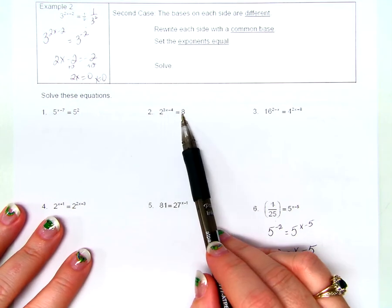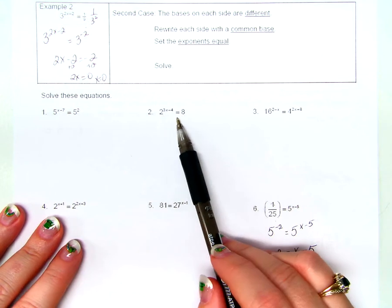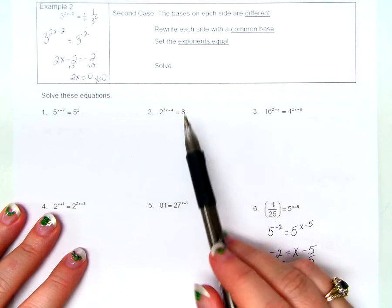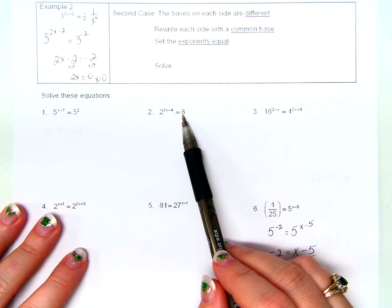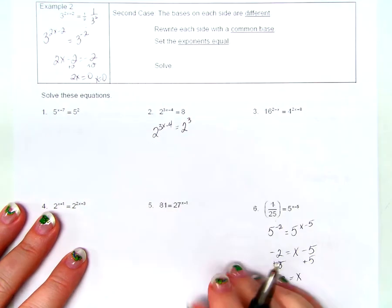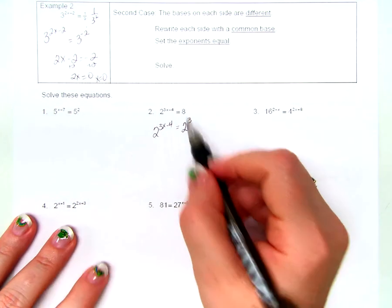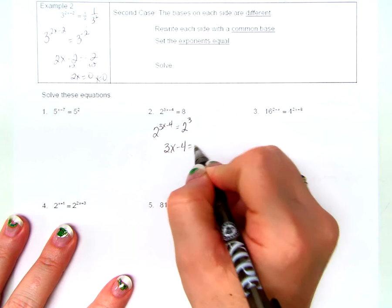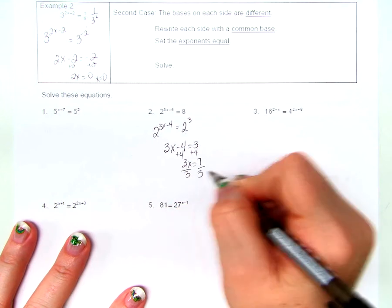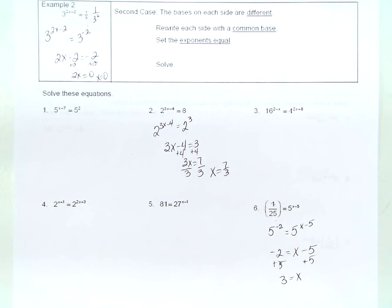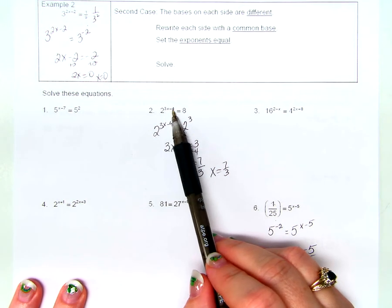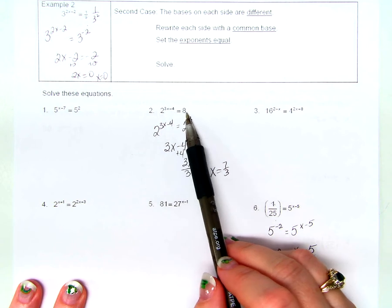Number 2: this has a base of 2 and this has a base of 8. I'll change the base of 8. Can't I write 8 as 2 to the 3rd? So: 2 to the 3rd equals 2 to the 3x minus 4. If the bases are the same, the exponents should be equal, so 3x minus 4 equals 3. Add 4 to both sides: 3x equals 7. Divide both sides by 3: x equals 7/3. Don't assume you did something wrong because it's a fraction. Check: 7/3 times 3 is 7, minus 4 is 3, and 2 to the 3rd power is 8. We got it right.